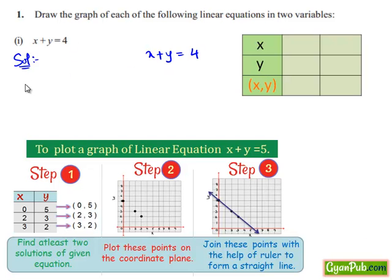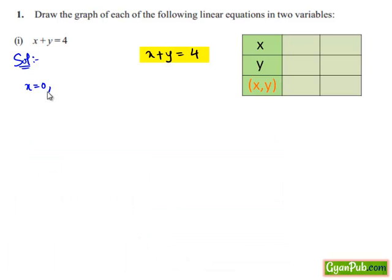Let us put x equals 0 in the given equation. Then we get 0 plus y equals 4, that is y equals 4. So when x equals 0, y equals 4. Hence the ordered pair (0, 4) is one of the solutions of the given equation.